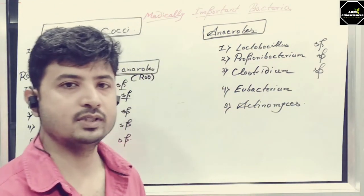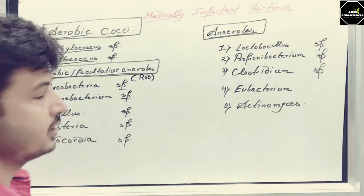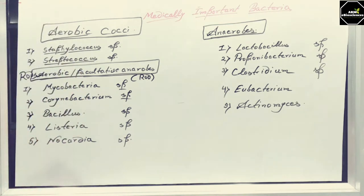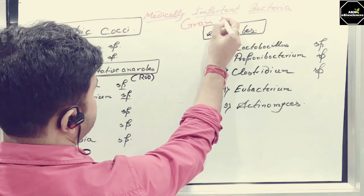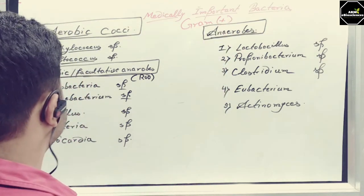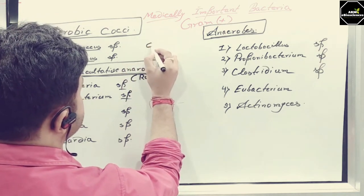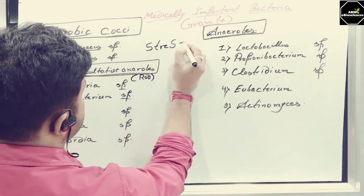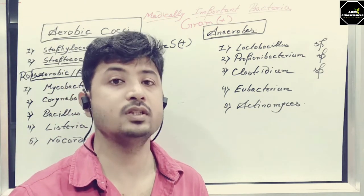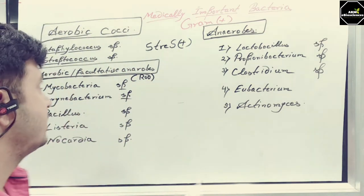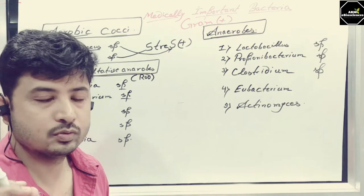I've divided the bacteria into different categories: aerobic, anaerobic, or facultative anaerobes, along with cocci, rods, and gram staining. All the bacteria I've written here are gram positive. The first category is aerobic cocci or facultative anaerobic cocci. The word to remember here is 'Stress Positive.' Stress covers Streptococcus and Staphylococcus, so just remember: aerobic cocci gram positive as Stress Positive.